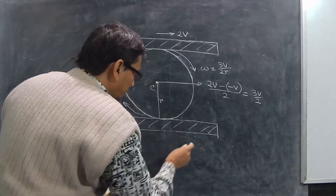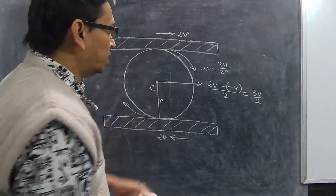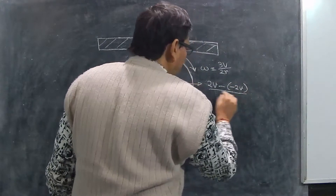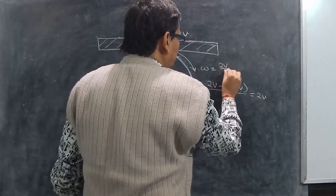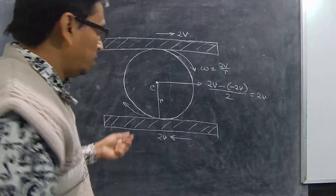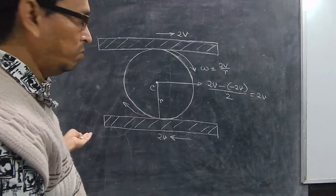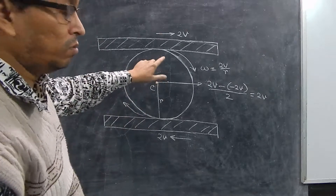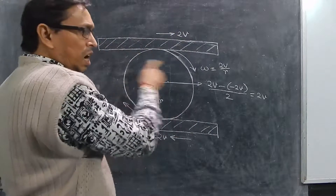Now suppose this plank also moves with 2V in the opposite direction. You get the relative velocity as 2V minus (−2V) divided by 2, which is 4V divided by 2, giving 2V. The omega will be 2V divided by R, so omega increases. But if someone is standing outside, they will see the center of mass as static, because this plank moves with 2V and the other with 2V in opposite directions — so as a whole the center of mass is static with respect to an external reference frame. But the cylinder will rotate with high velocity, that is 2V by R.